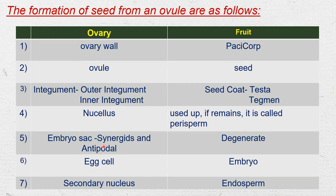In the embryo sac, synergids and antipodal cells degenerate; the egg cell changes to form the main part of the embryo; and the secondary nucleus changes to form the endosperm.